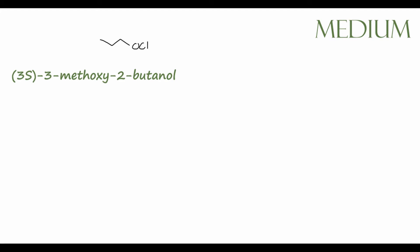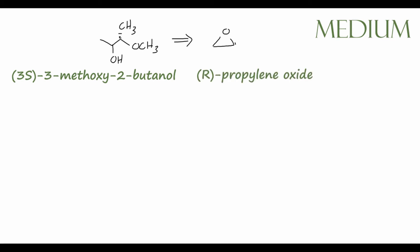Let's move on to the medium or intermediate reaction. This will be the production of 3S-3-methoxy-2-butanol. I'm giving you the systematic nomenclature just to give you a taste of it. Our product will be 3S-3-methoxy-2-butanol, and our starting material will be R-propylene oxide. Go ahead and pause the video, attempt the problem on your own, and then come back when you're finished.